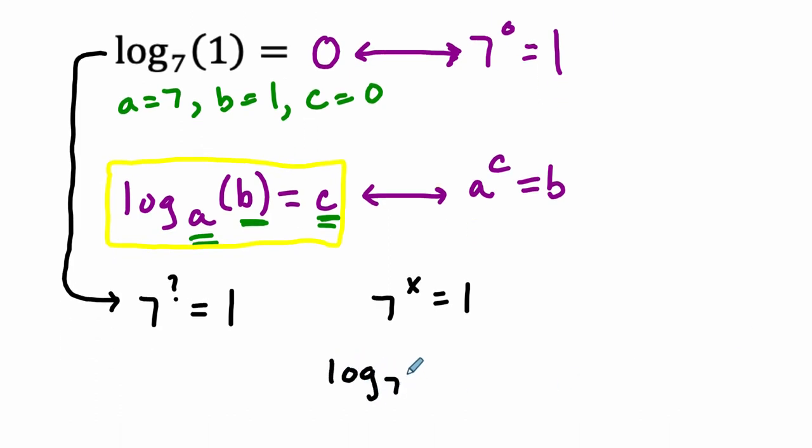Log base 7 of 7 to the x equals log base 7 of 1. You could take the log of both sides of an equation just like you can do other operations to both sides of an equation and maintain the balance.